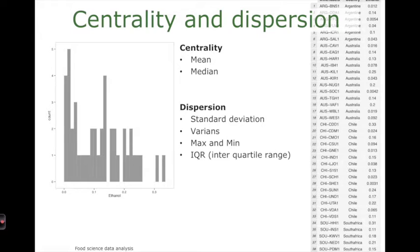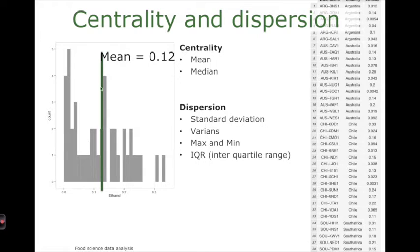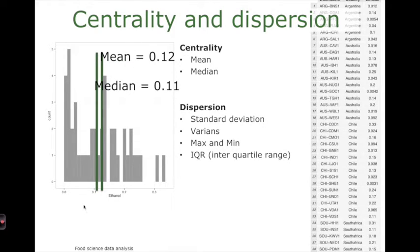Centrality refers to where the distribution approximately is — the center of the distribution. Looking at an example, the center of the distribution is between 0.1 and 0.2. To measure centrality we have two useful measures: the mean and the median. The mean of these numbers is 0.12, which sits just in the middle of the distribution. The median is the middle observation — you sort all observations from lowest to highest and take the midpoint — that gives 0.11. These two numbers are usually very close to each other.